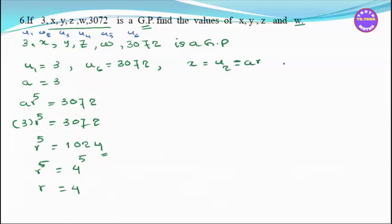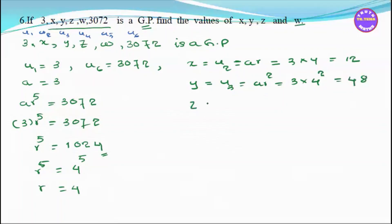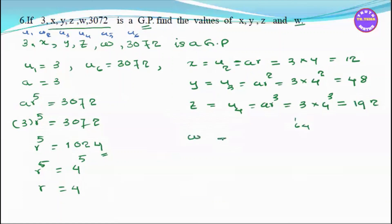So U2 is a times r, giving x. U3 is a times r squared, giving y. U4 is a times r cubed, giving z. U5 is a times r to the power 4, giving w.